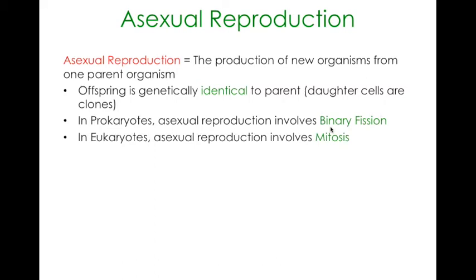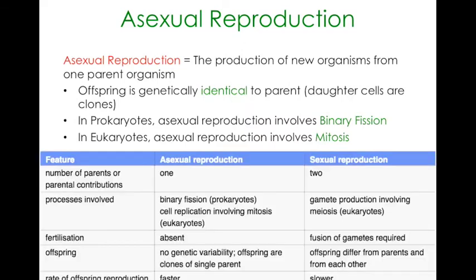In eukaryotes — that is the rest of us, organisms or cells with a nucleus — asexual reproduction can happen through mitosis. We've already learned about mitosis, but that's how eukaryotes can reproduce asexually.